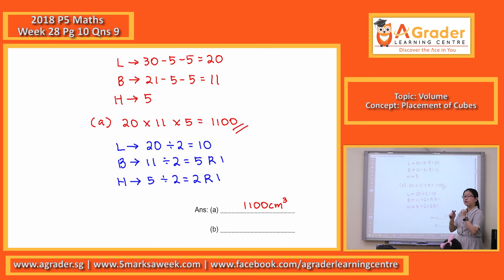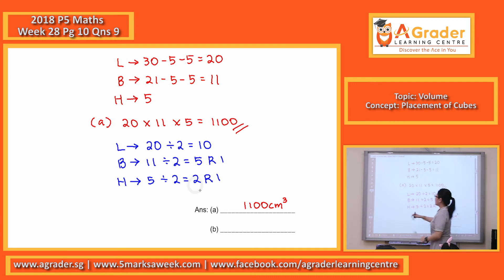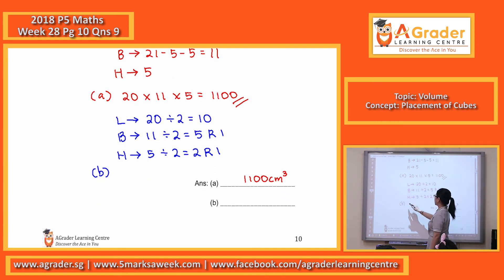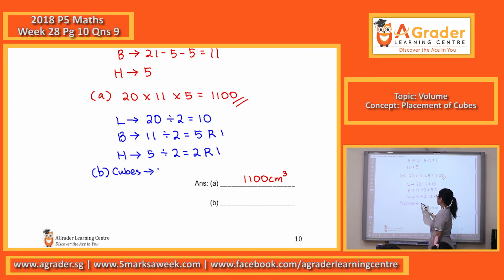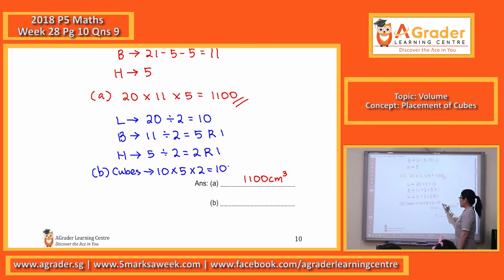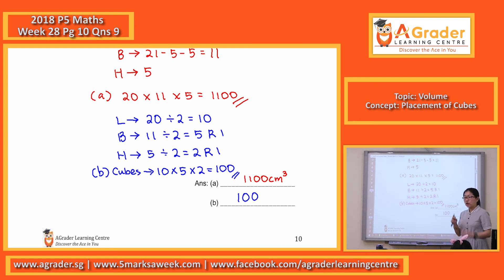After that, we just multiply to find the number of cubes that we can put into the box: 10 × 5 × 2 = 100. One hundred cubes. You can only physically put in whole cubes — one hundred of them.